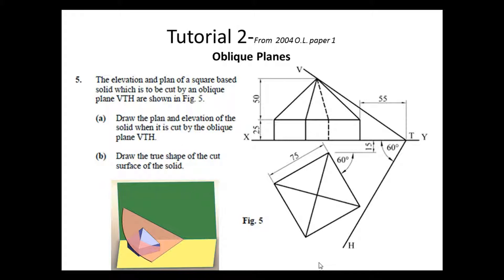So the question says, The elevation and plan of a square base solid, which is to be cut by an oblique plane VTH, are shown in figure 5. The first part of the question is going to ask you to draw the plan and elevation of the solid when it is cut by the oblique plane VTH.